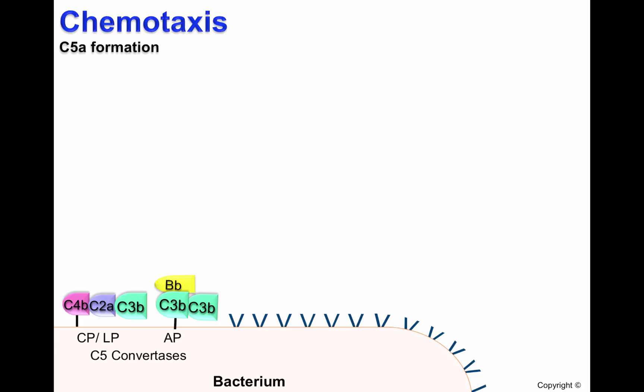BB, C3B — cleave C5 to generate C5A and C5B.